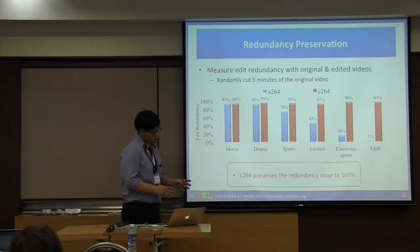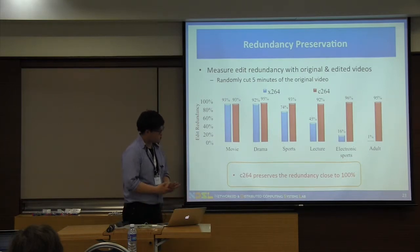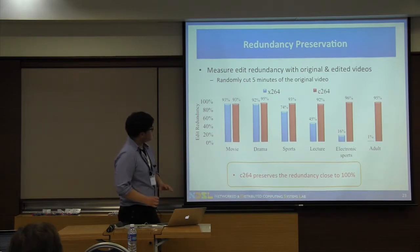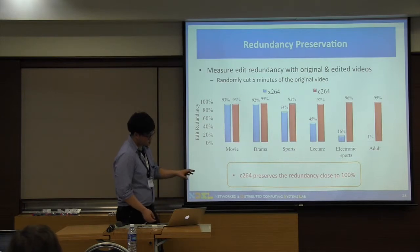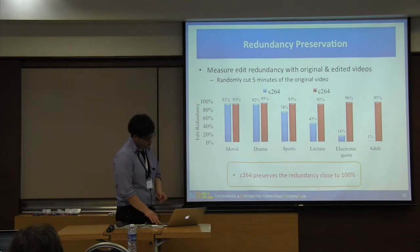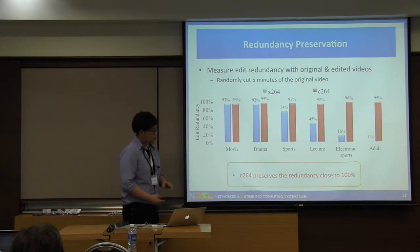We evaluate the effectiveness of redundancy preservation of our new encoding scheme. We measure edit-redundancy with original videos and edited videos. We cut 5 minutes at a random position from each video and encode it with both x264-based encoder and C264-based encoder, then compare edit-redundancy between the 5-minute clips and the original videos. We found that C264 preserved redundancy close to 100% from the original videos regardless of the type of video. Whereas the x264-based encoder showed comparable results only for two types of content — panning and running — since those types don't have many I-frames. In conclusion, C264 preserved redundancy regardless of content type, whereas x264 is easily affected by content type.